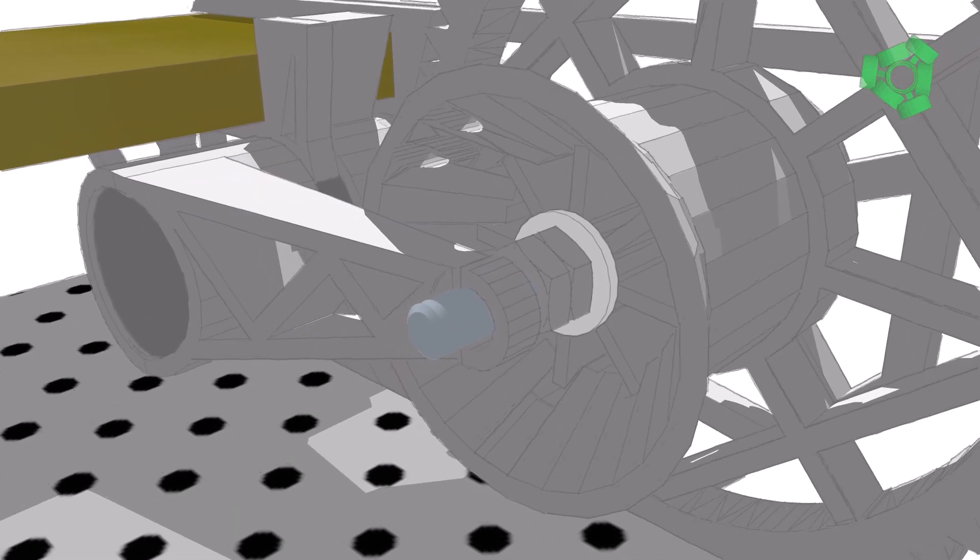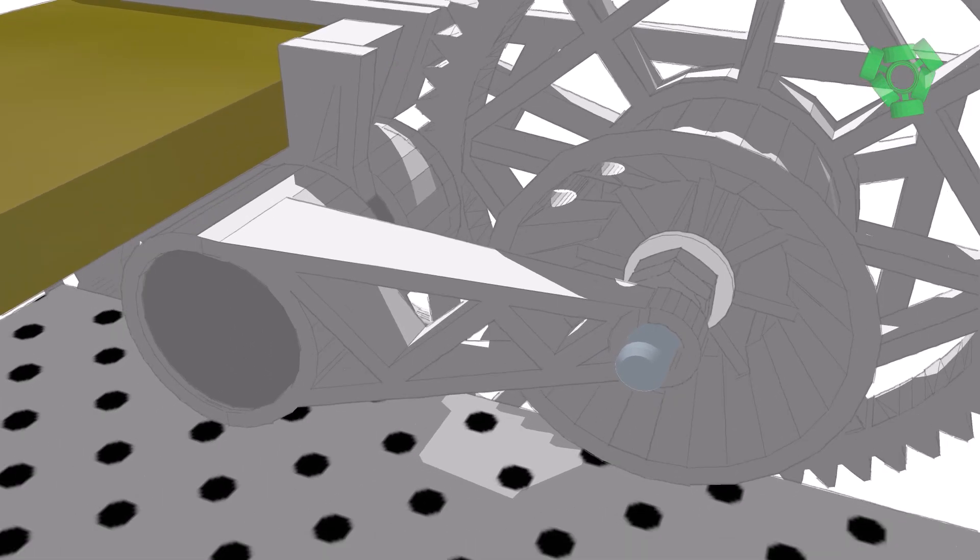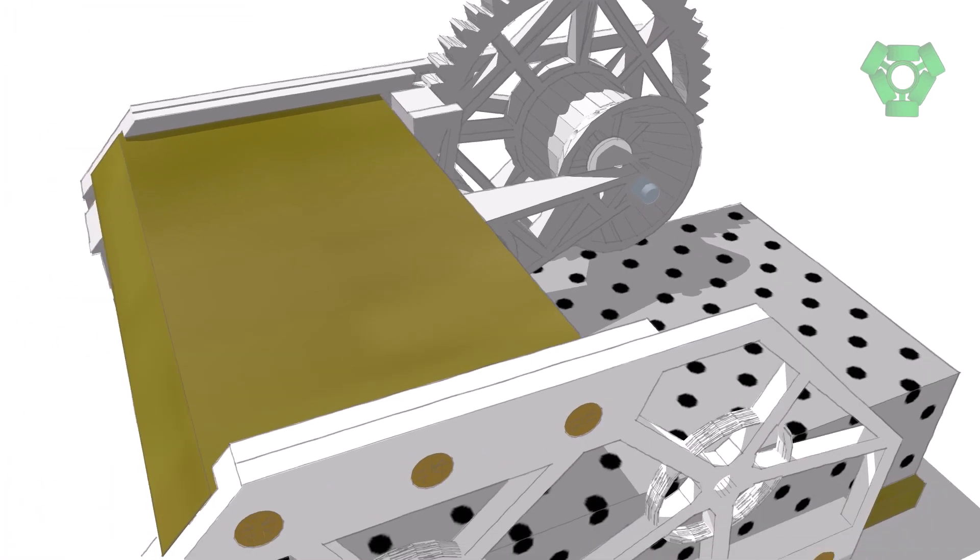Slide the support arm onto the motor and threaded rod. This will keep the two parallel while the filament extruder is running.